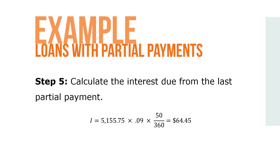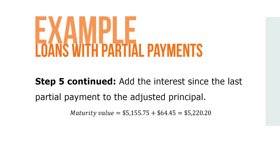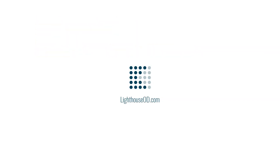So I equals $5,155.75 times 0.09 times 50 over 360, which equals interest of $64.45. The maturity value is then found by adding the interest since the last partial payment to the adjusted principal: $5,155.75 plus $64.45 equals a total maturity value of $5,220.20.